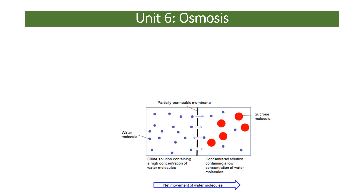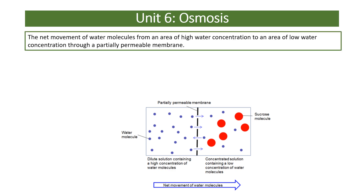Plant cells are an ideal place to start studying osmosis, though it can happen in animal cells too. Osmosis is the movement of water — that's the critical thing. Never talk about osmosis unless it's water, and if it is water, don't mention diffusion. Osmosis is the net movement of water from an area of high water concentration to an area of low water concentration through a partially permeable membrane.